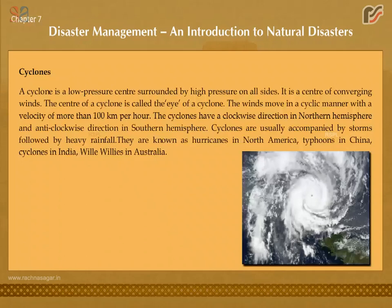A cyclone is a low pressure center surrounded by high pressure on all sides. It is a center of converging winds. The center of a cyclone is called the eye of the cyclone. The winds move in a cyclic manner with a velocity of more than 100 km per hour. Cyclones move in a clockwise direction in the Northern Hemisphere and anti-clockwise direction in the Southern Hemisphere.